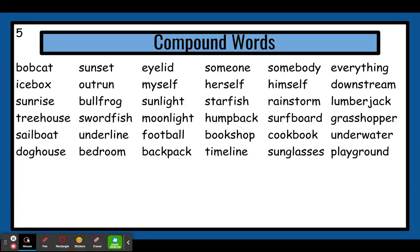Here we have the small word sun, and another small word, set. You put them together and you have sunset. The word sun is a word all by itself — we all know what the sun is. And then when it sets in the sky, that's the word set. You have a sunset. It's a new word made up of two smaller words: sun and set.